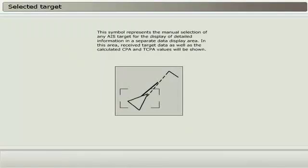This symbol represents the manual selection of any AIS target for the display of detailed information in a separate data display area. In this area, received target data, as well as the calculated CPA and TCPA values, will be shown.